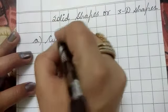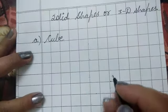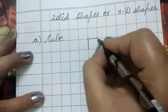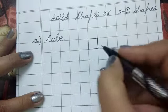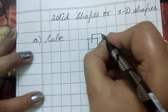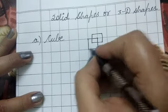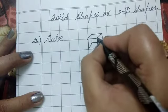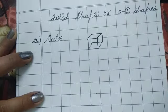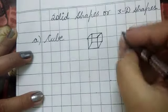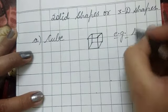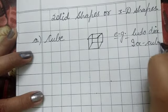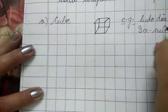First one is cube. For this, first of all we make a square, then another square, then another square, and join it. This is called cube. For example, our Ludo dice, ice cube also.